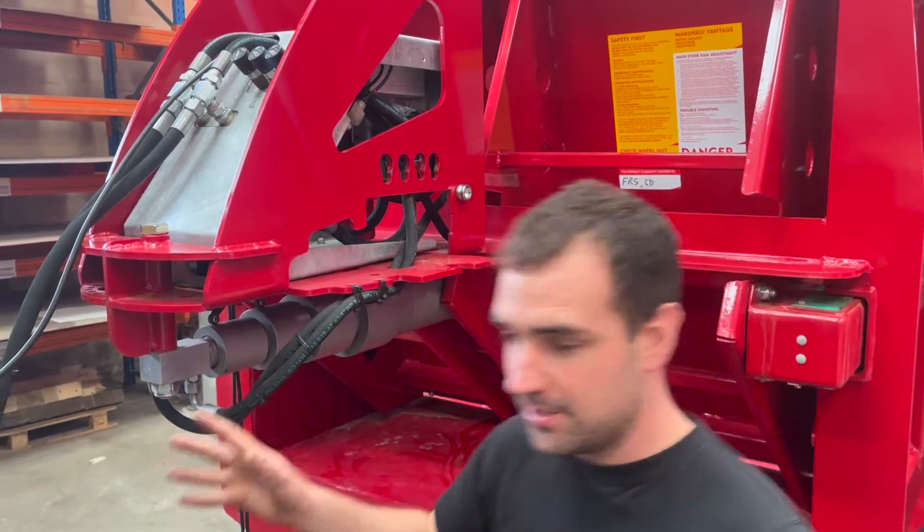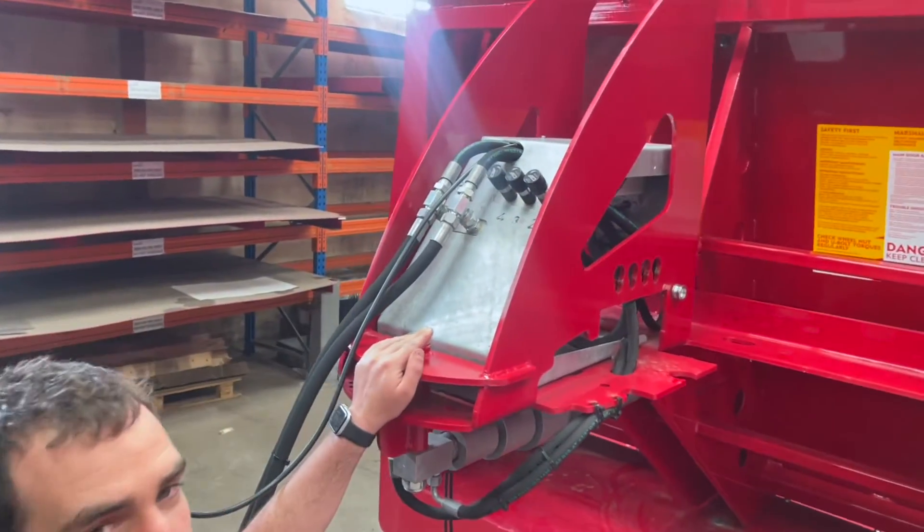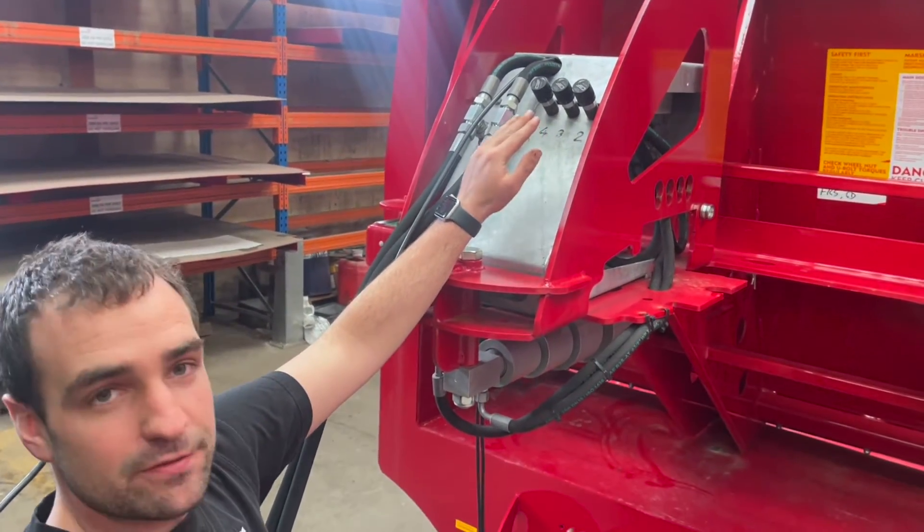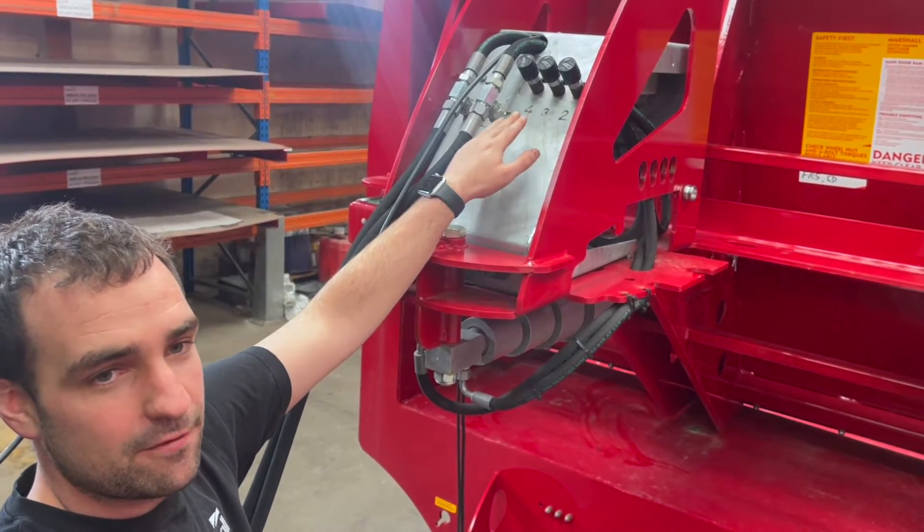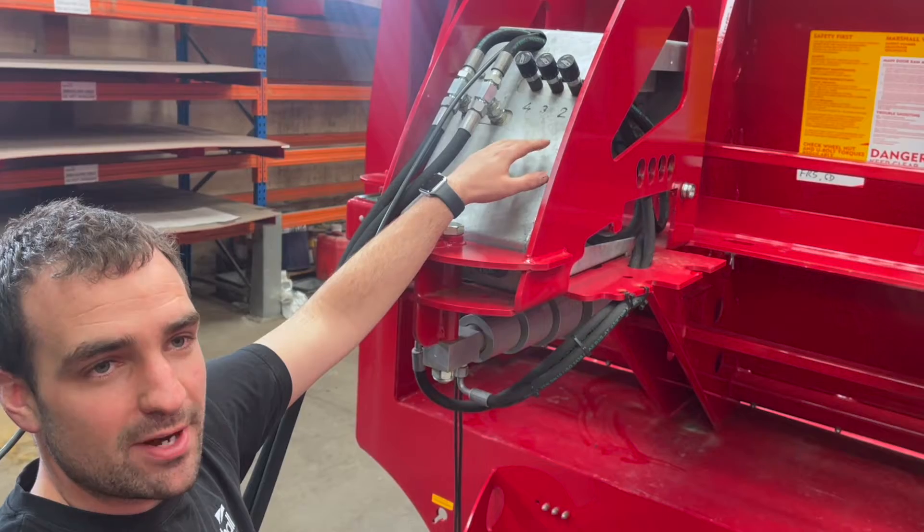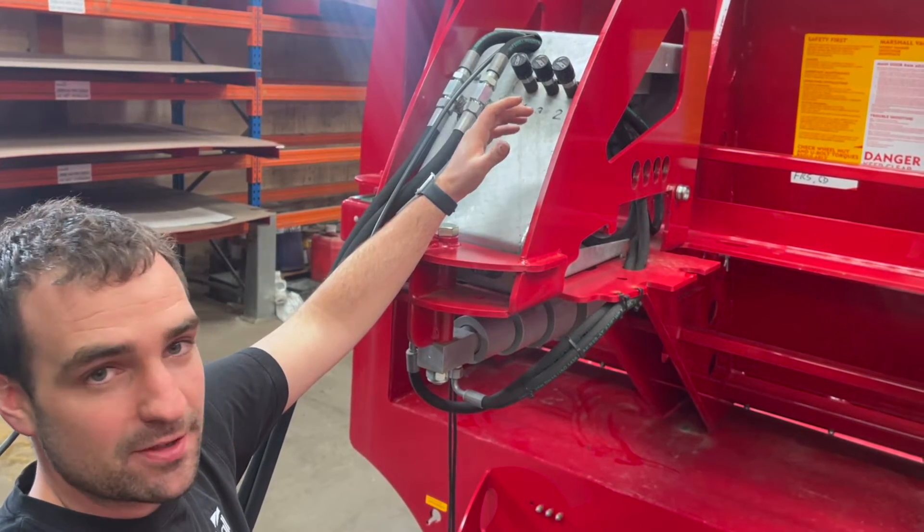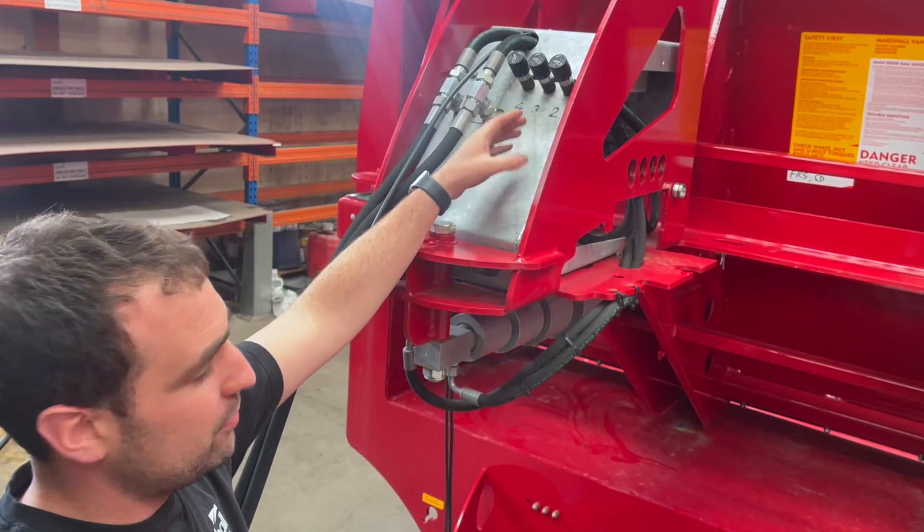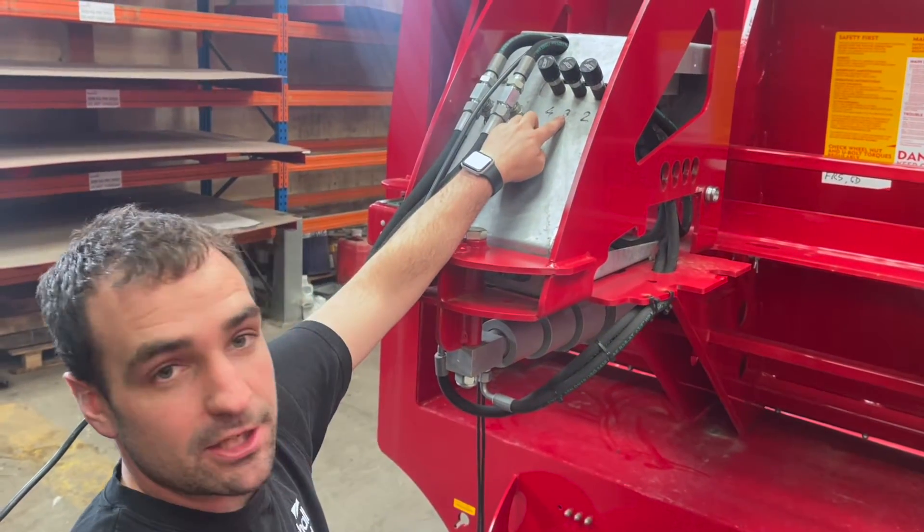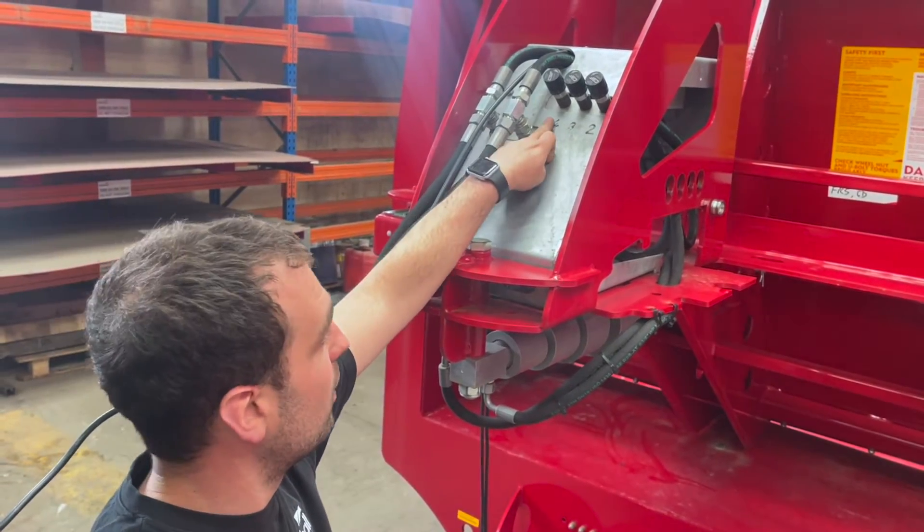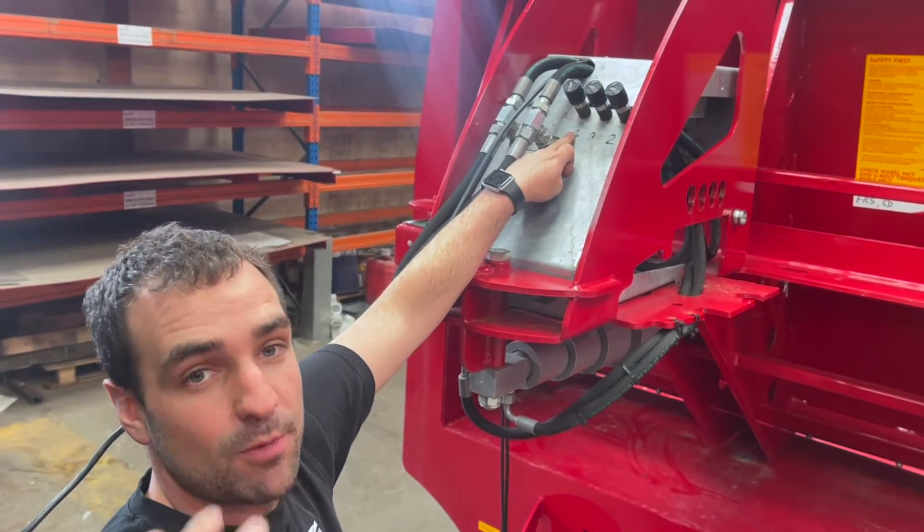We'll now move around the front, where you will see three flow control valves. Each of these flow control valves has a number underneath it, number two, three and four. Each of those numbers represent the stages on the ram after the biggest stage. So for example, number two is the second biggest stage, number three is the third biggest stage, and number four is the fourth biggest stage or the smallest stage of the ram.